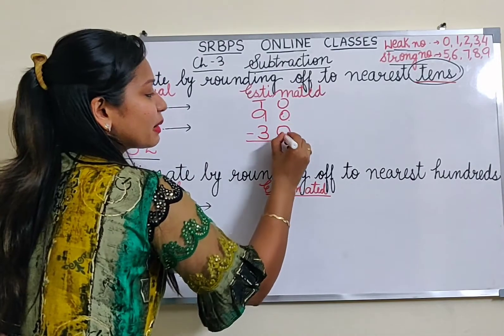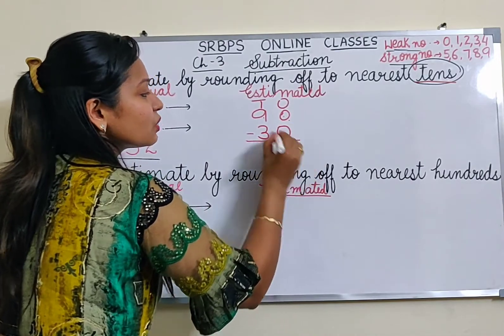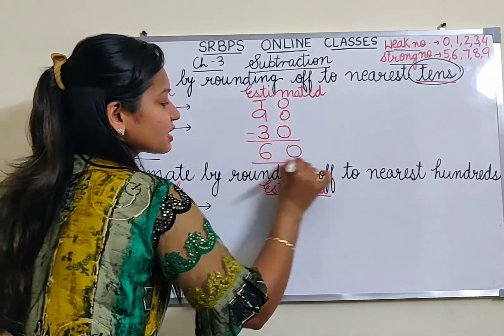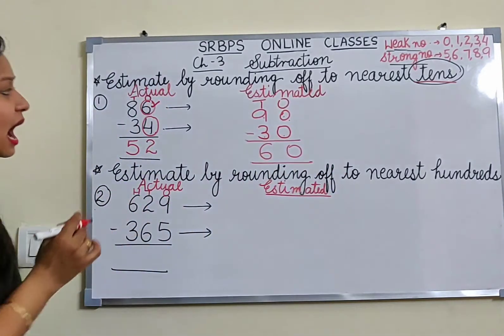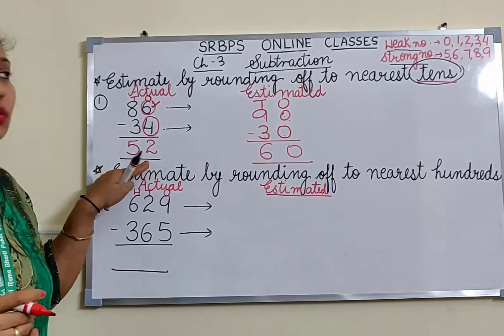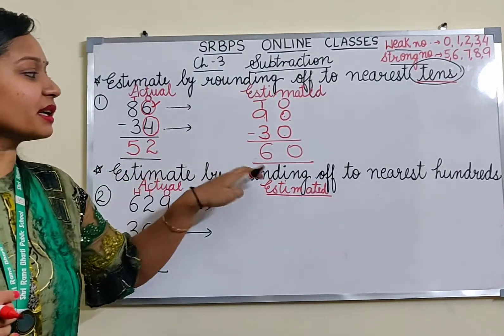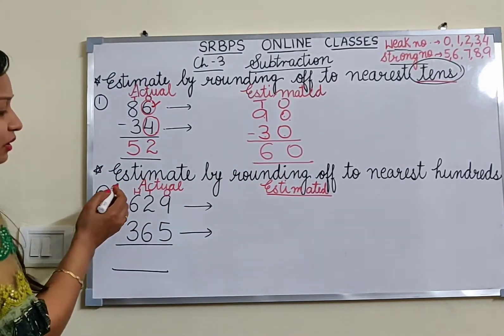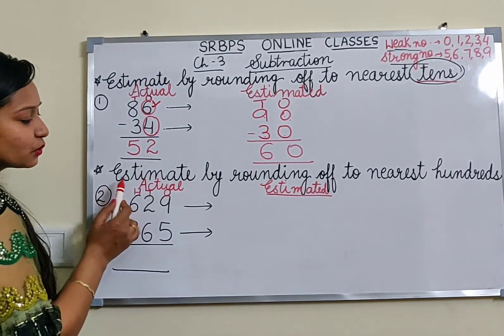Now we subtract: 0 minus 0 is 0, and 9 minus 3 is 6. So our actual answer was 52 and the estimated answer is 60. Now let's read the second question.